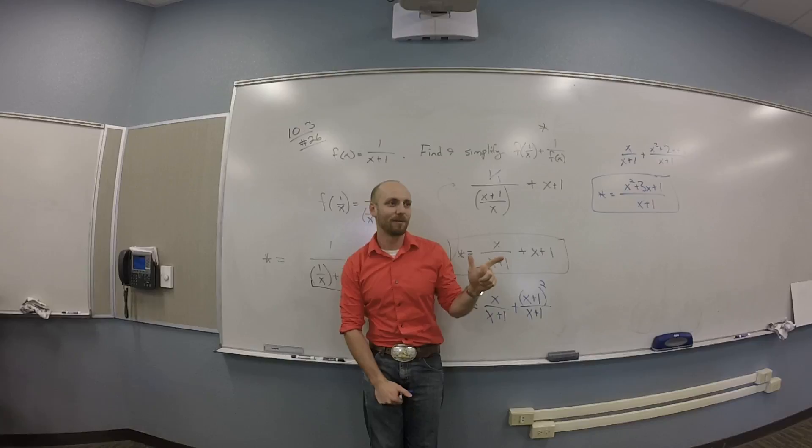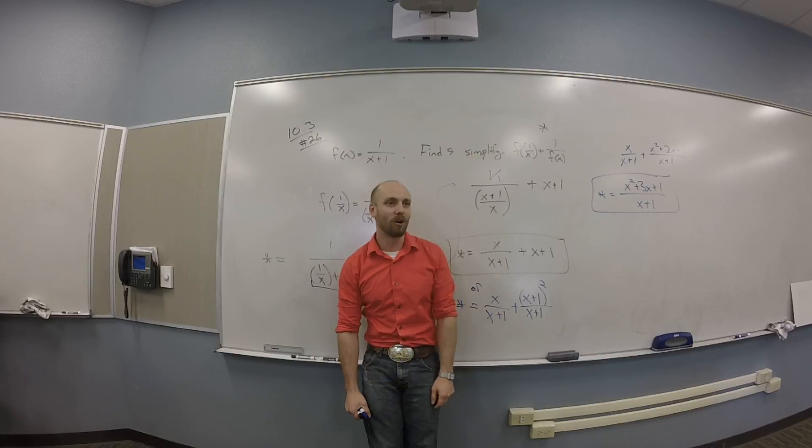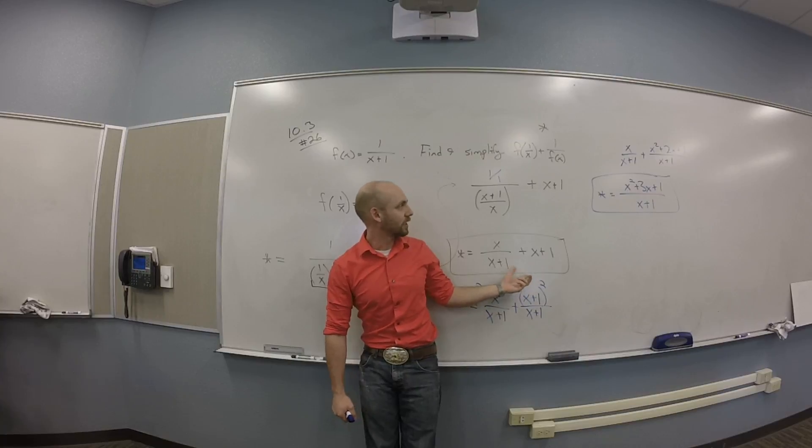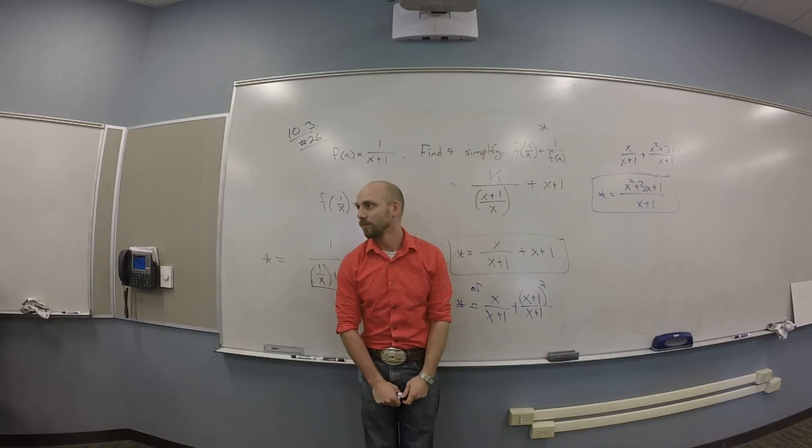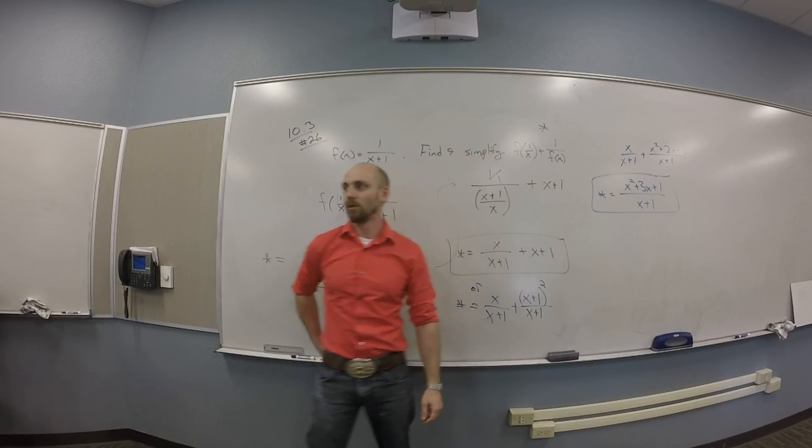I need two numbers that multiply to 1 and add to 3. There's only one pair of numbers that multiplies to 1, one pair of integers at least, 1 and 1, right? They don't add to 3 because they add to 2. So this thing doesn't factor anymore. So you could leave it. I would probably leave it at the black stage rather than the blue. Personally, I believe this seems simpler than that. Cool.